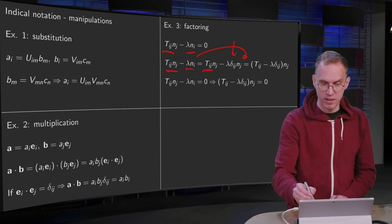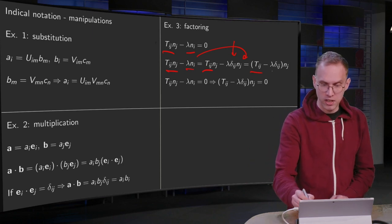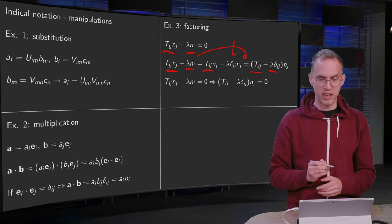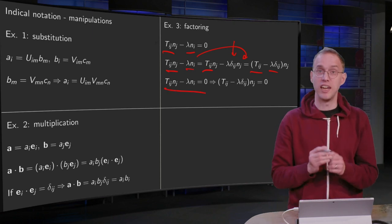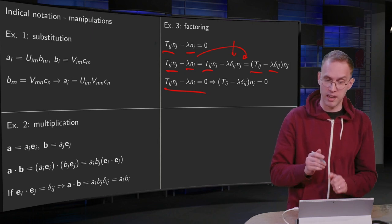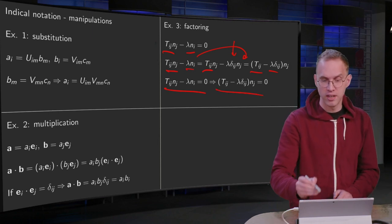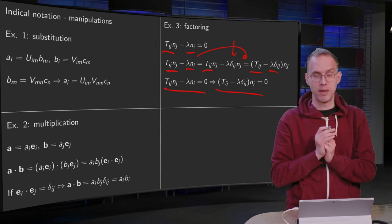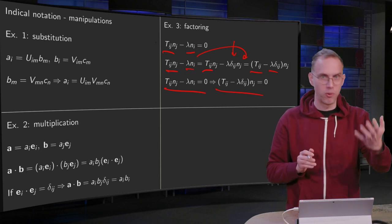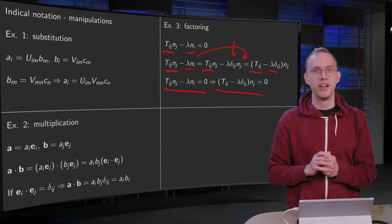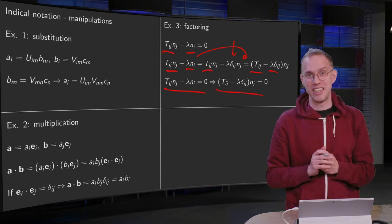So we can rewrite this expression T_ij n_j minus lambda times n_i = 0 as (T_ij - lambda delta_ij) n_j = 0. And of course, if you have done linear algebra, I guess you will recognize this trick.